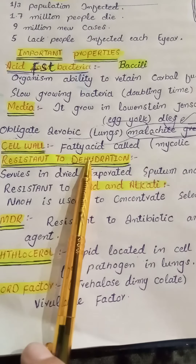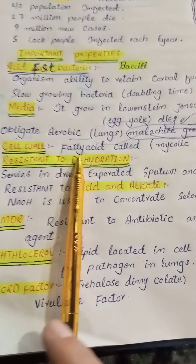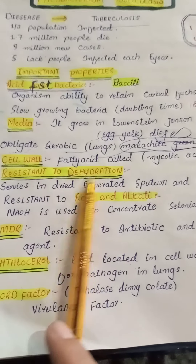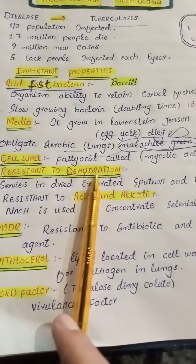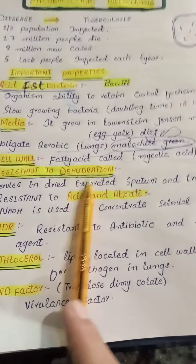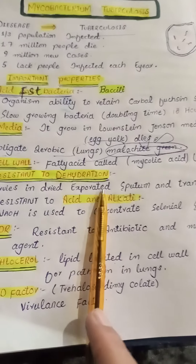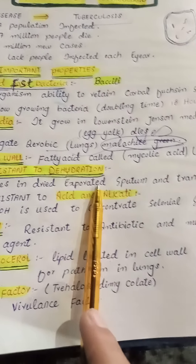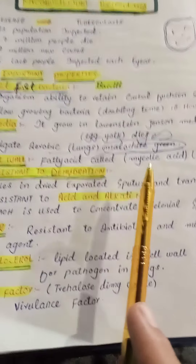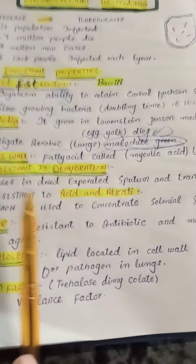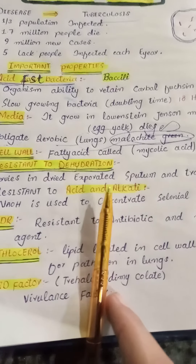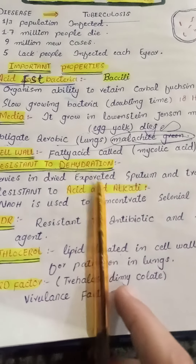This bacteria is resistant to dehydration — it is very important to know. Mycobacterium tuberculosis is resistant to dehydration and therefore survives in dry expectorated sputum. This property may be important in its transmission by aerosols.